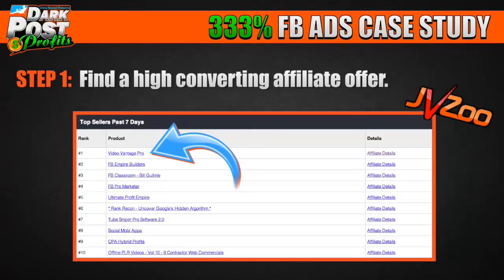Step one: I find a high-converting affiliate offer. In this example, I go to JVZoo and look at the leaderboard for the top sellers in the past seven days. In this example, I used VideoVantage Pro, which was sitting at the number one spot.